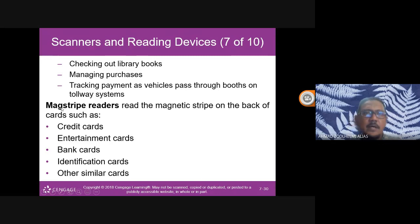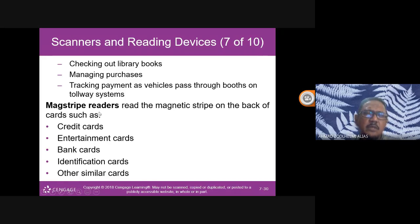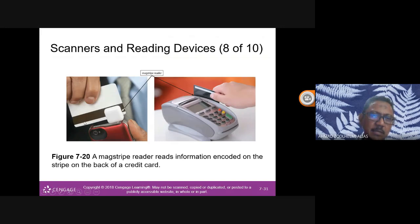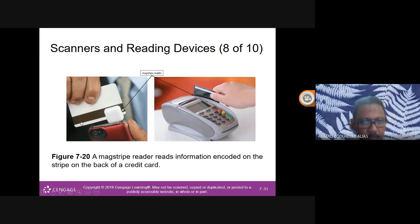Magstripe readers read the magnetic stripe on the back of cards such as credit cards, entertainment cards, bank cards, and identification cards. Examples include loyalty cards like Bonus Link or Petronas cards. Most cards now use chips rather than magstripes because magstripes are cheaper but easier to duplicate, whereas chips are more secure.